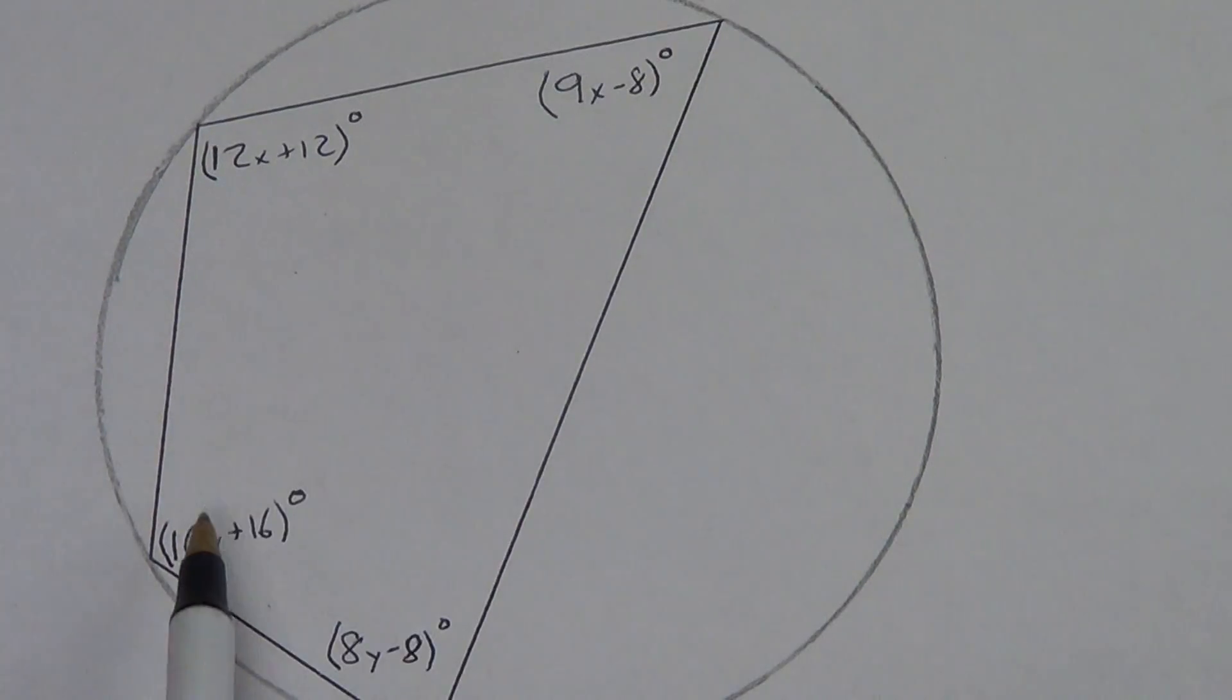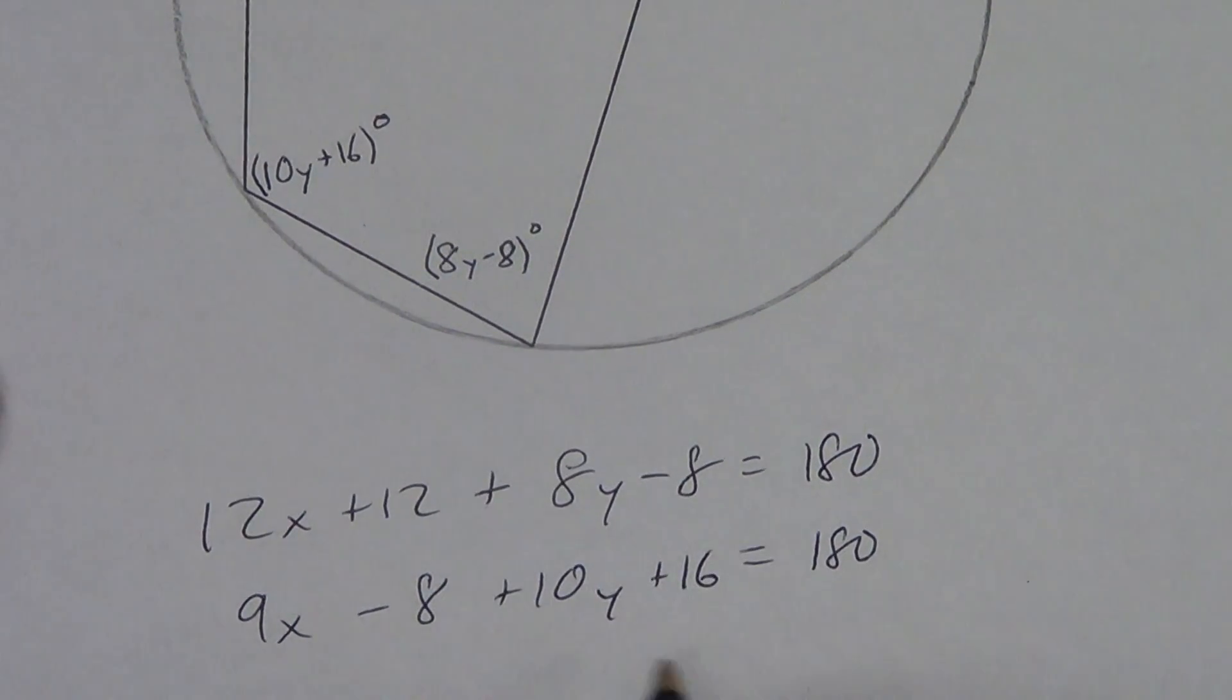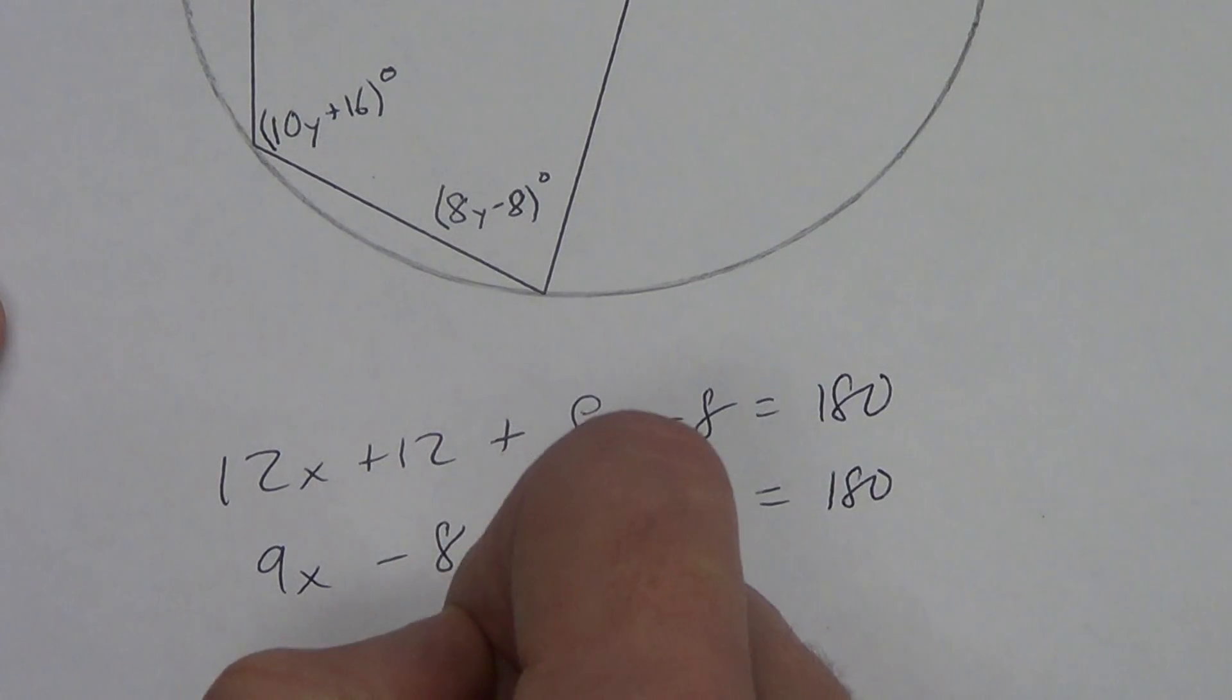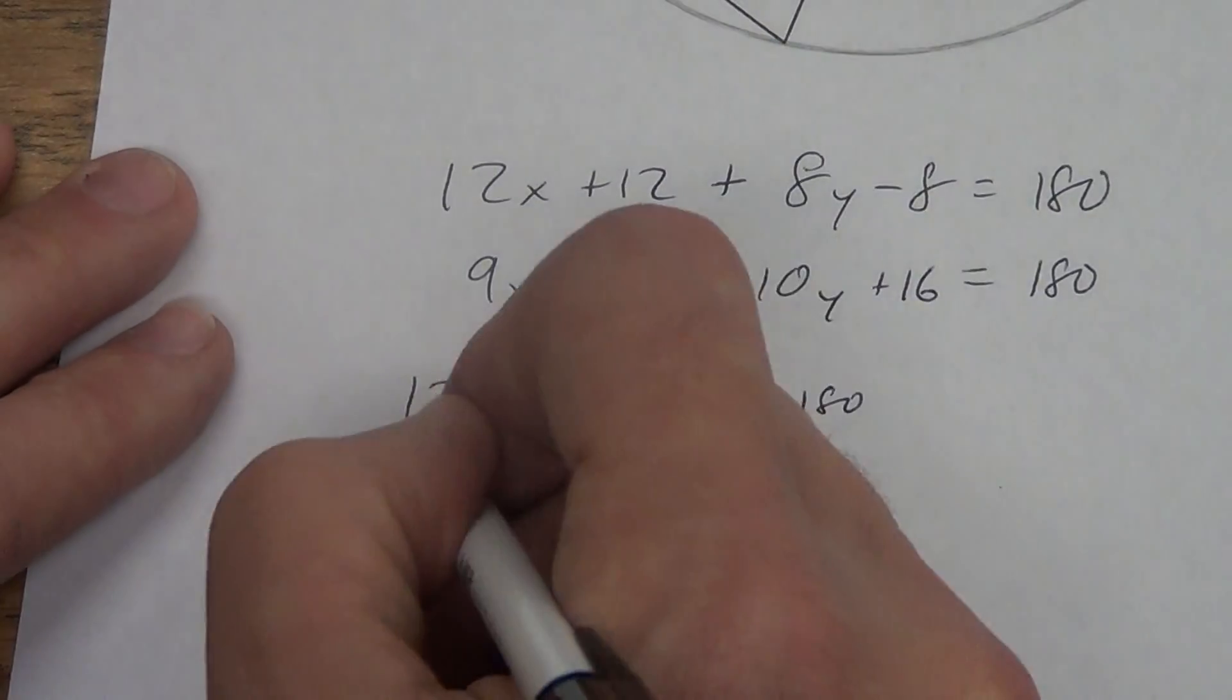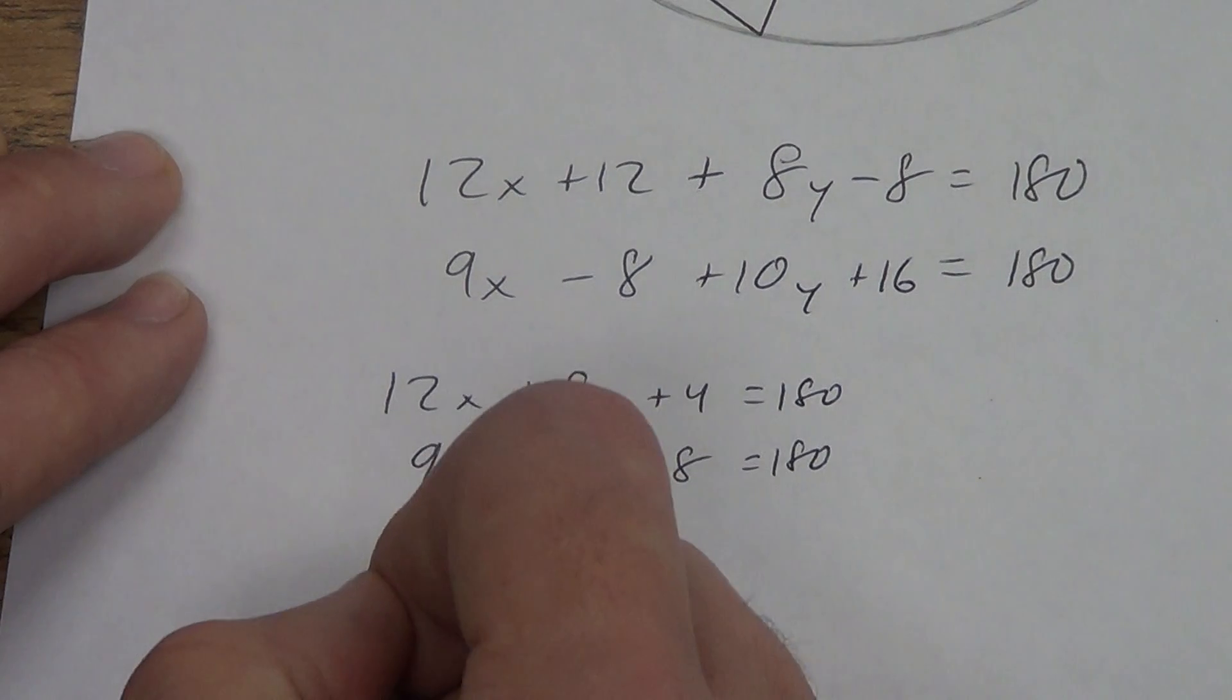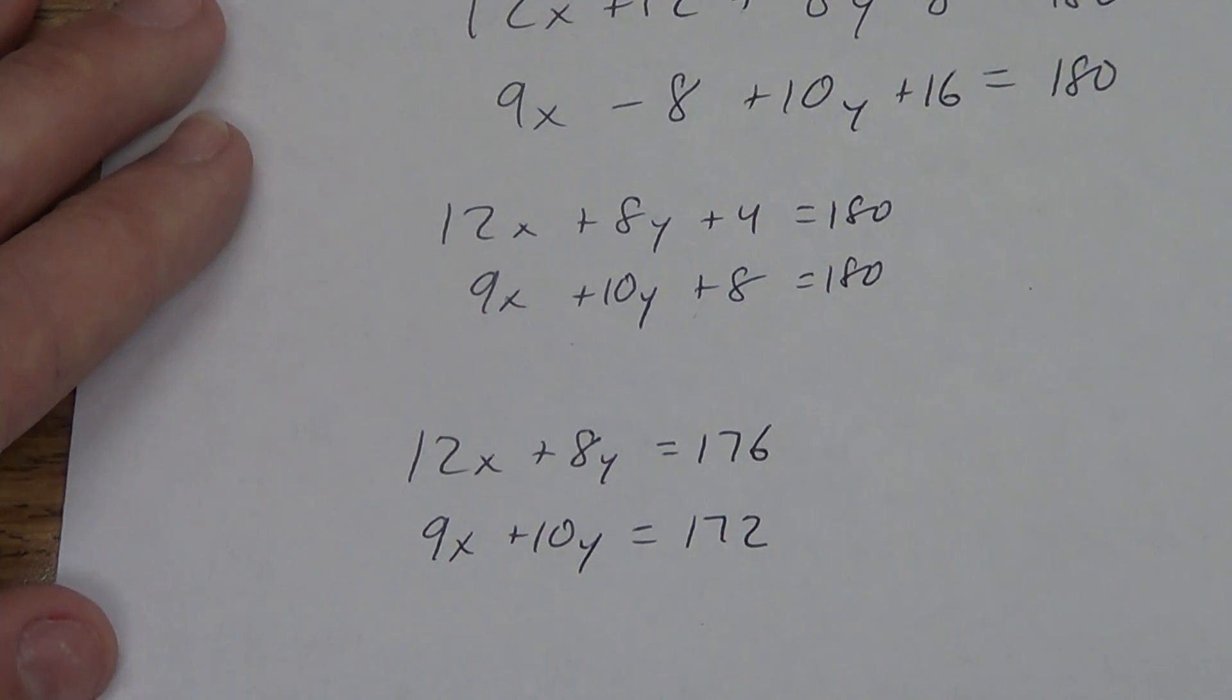What's the second equation? I've got these angles: 9x minus 8 plus 10y plus 16 equals 180. Now I have two equations and two variables. Let's do a little simplifying. 12x plus 8y plus 4 equals 180. And 9x plus 10y plus 8 equals 180. I'm going to subtract 4 from both sides here, subtract 8 from both sides here. So now I have 12x plus 8y equals 176, and 9x plus 10y equals 172. That should look familiar, like an algebra 1 problem.